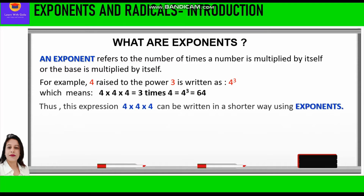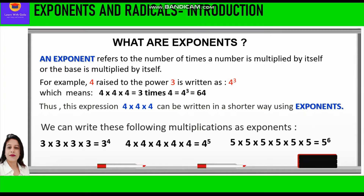Thus the expression 4 into 4 into 4 can be written in a shorter way using exponents. Now we can write multiplications in the form of exponents. If we have to multiply 3 four times, we write 3 raised to power 4. Similarly, if we have to multiply 4 five times, we write 4 raised to power 5, and if we have to multiply 5 six times, we write 5 raised to power 6.